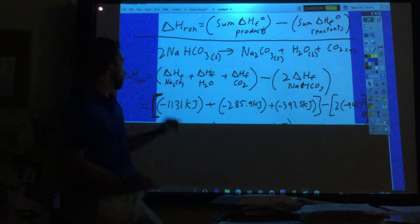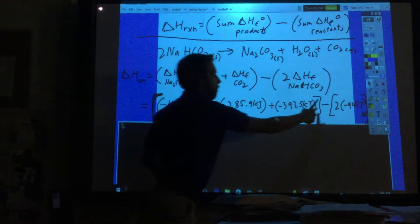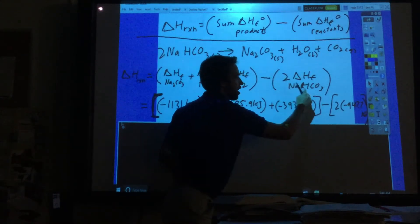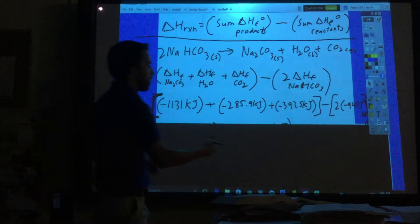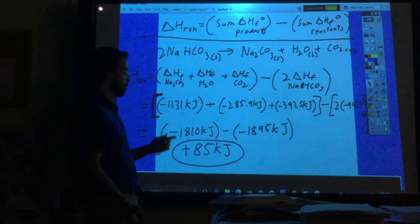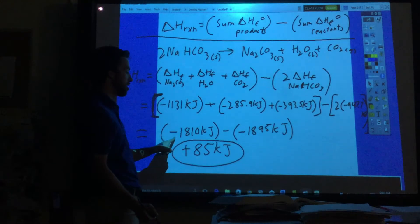I like to use the brackets and then the parentheses minus two times the value for the NaHCO3. These are all in kilojoules. If we do the algebra we get negative 1810 minus negative 1895.